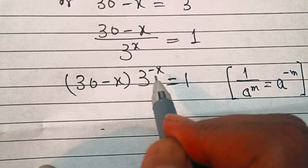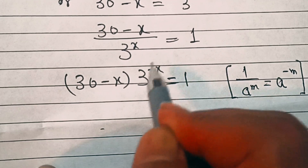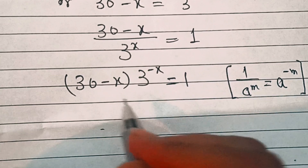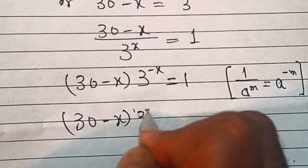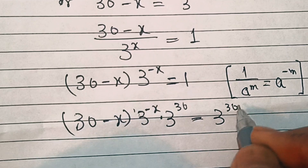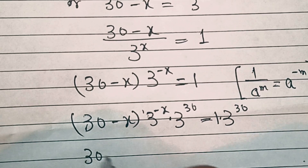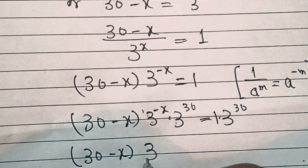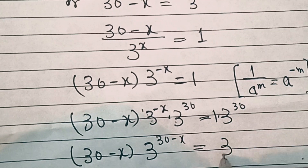Now the exponent of 3 is minus x and the coefficient is 30 minus x. We'll make this coefficient the same as this exponent. So for that we'll multiply both sides by 3 power 30. We have 30 minus x into 3 power minus x into 3 power 30 equal to 3 power 30. Since the bases are the same, the powers get added, so we can write this as 30 minus x into 3 power 30 minus x equal to 3 power 30.